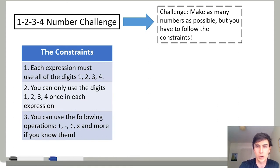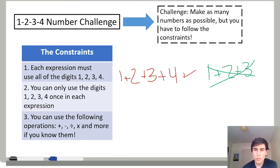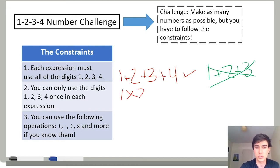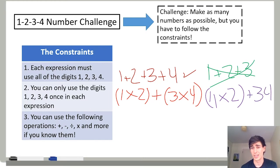So I could do one plus two plus three plus four — that works. I can't do one plus two plus three because I'm not using four — that doesn't work. You can only use the digits one, two, three, or four once in each expression. I can do one times two plus three times four, but I can't do eleven times two plus 34 because I use the digit one twice — that does not work.